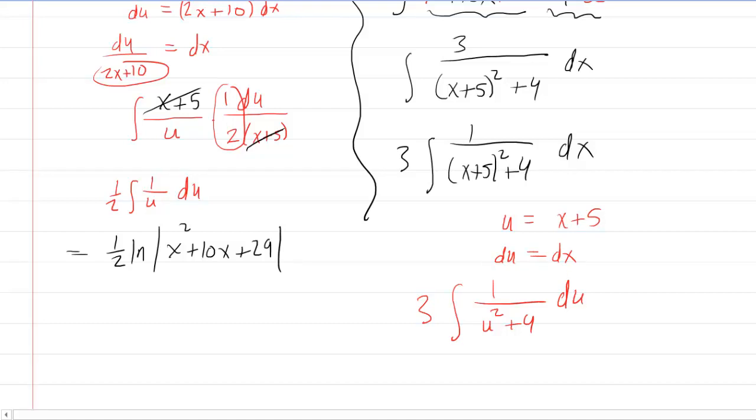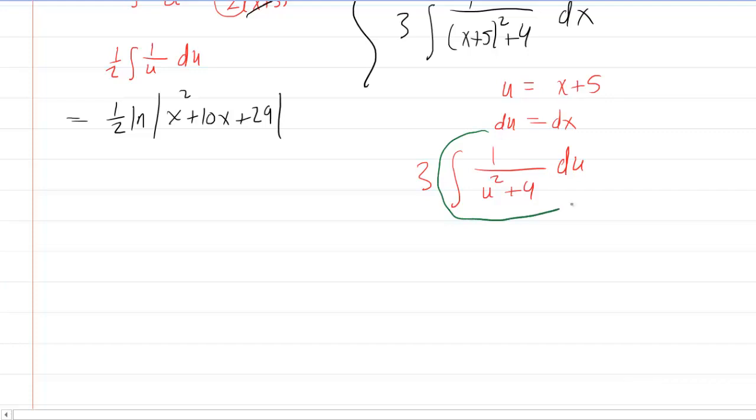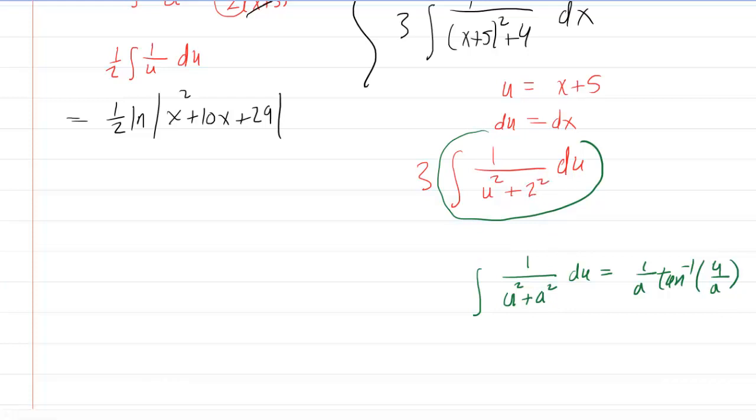Now, perhaps we are all aware of a shortcut integration rule for this type of expression here. In a table of integrals, you've probably seen that the integral of 1 over, and then they'll probably write it as u squared plus a squared du. This happens to equal 1 over a times the arctangent of u over a. Now, in our case, the a is actually 2 because what we do is we take the 4 that we had right there and we rewrite that as 2 squared. So the value of our a is actually going to be 2.